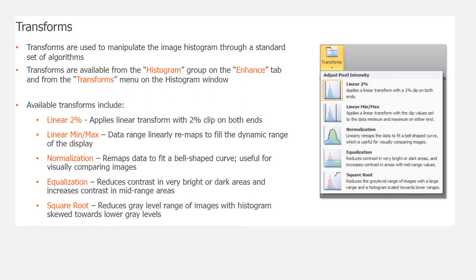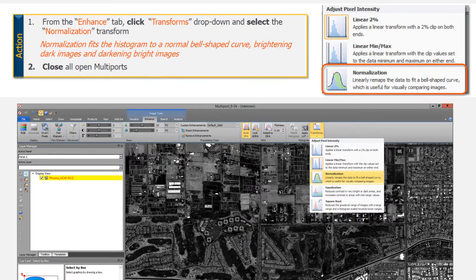Next we're going to talk about transforms. Transforms are used to manipulate the image histogram through a standard set of algorithms. They're available from the Histogram group in the Enhance tab, and from the Transform menu of the Histogram window. If you click the Transform button, a dropdown shows the different options: Linear, Linear Max-Min, Normalization, etc. We're going to go back to the Enhance tab, go to the Transforms dropdown, and select Normalize. This fits the histogram to a normal bell-shaped curve — making darker parts brighter and taking really bright spots down a bit, equalizing things out. Once you see what it looks like, close your multi-port.